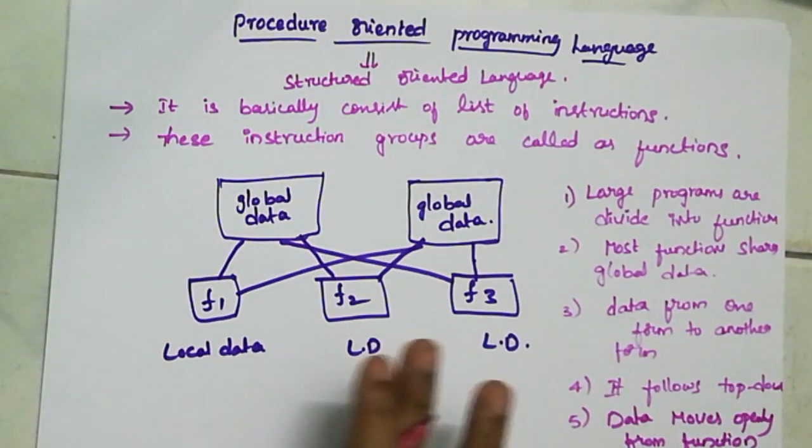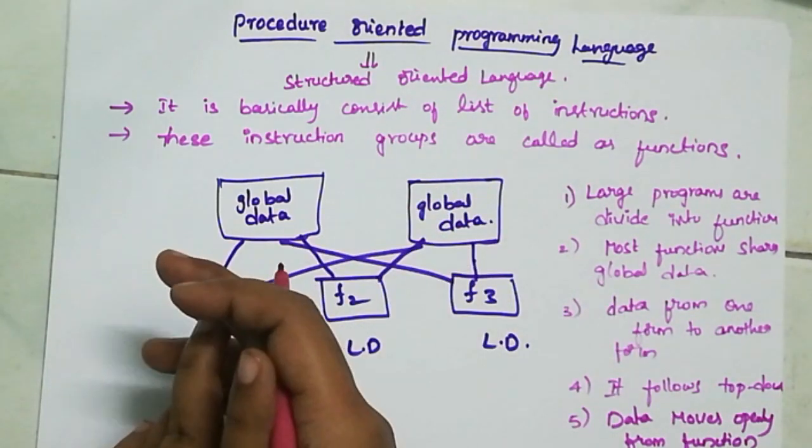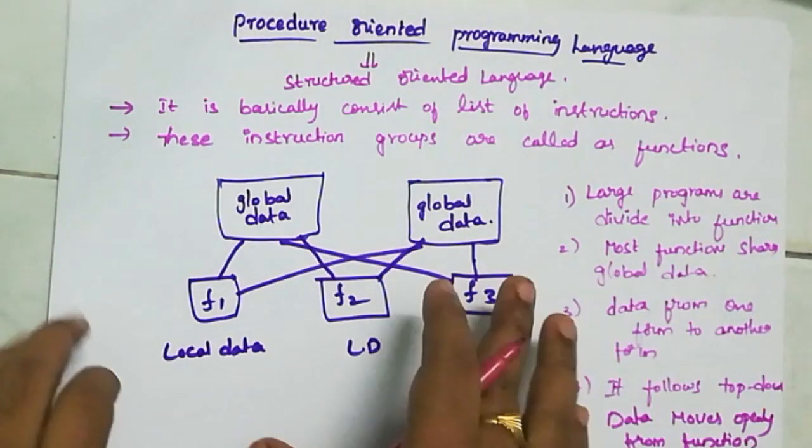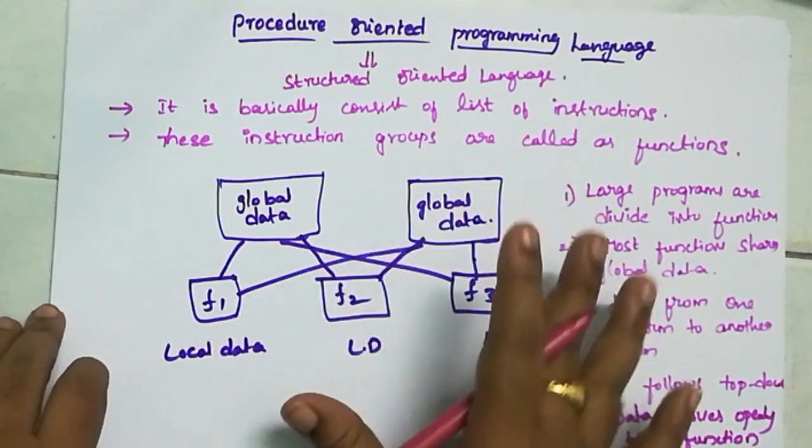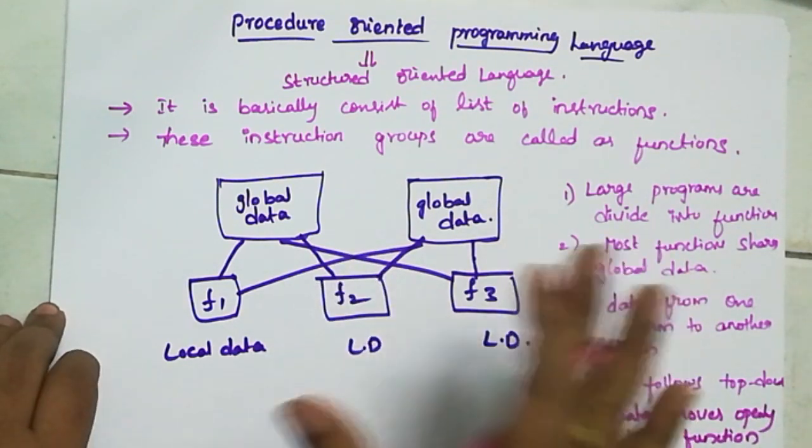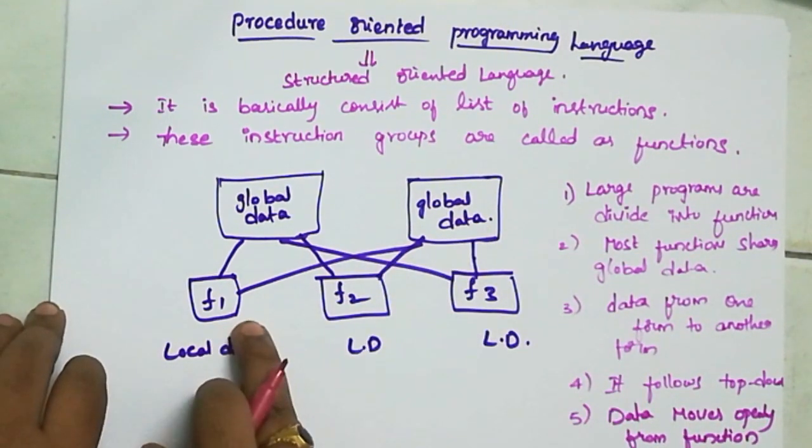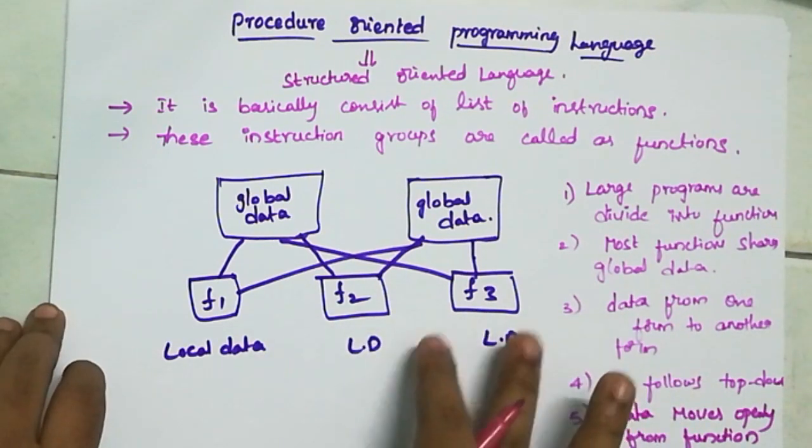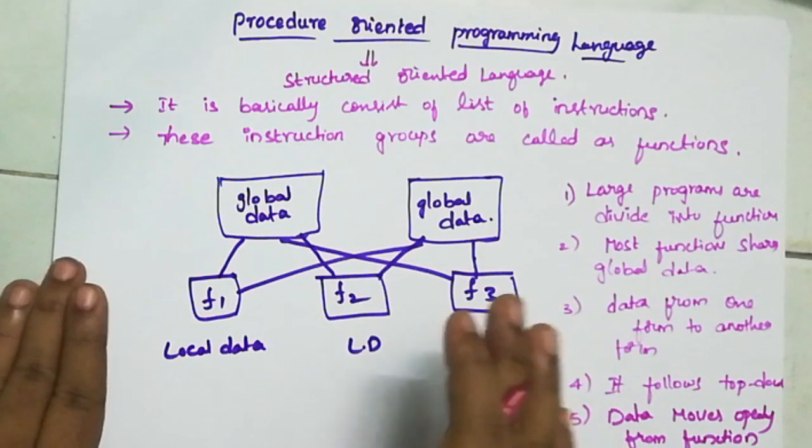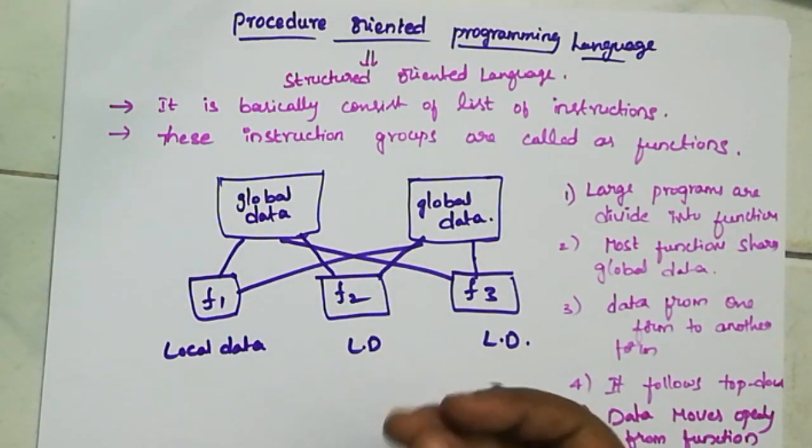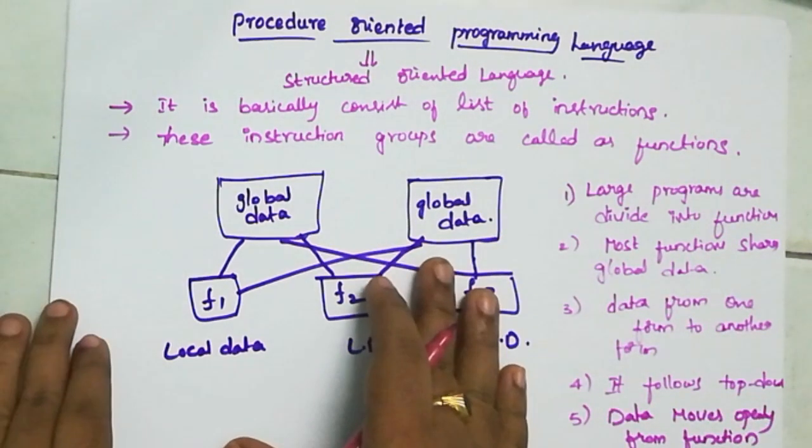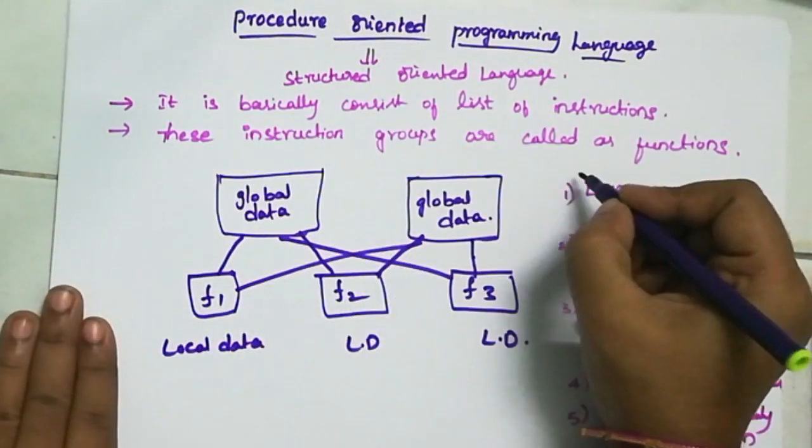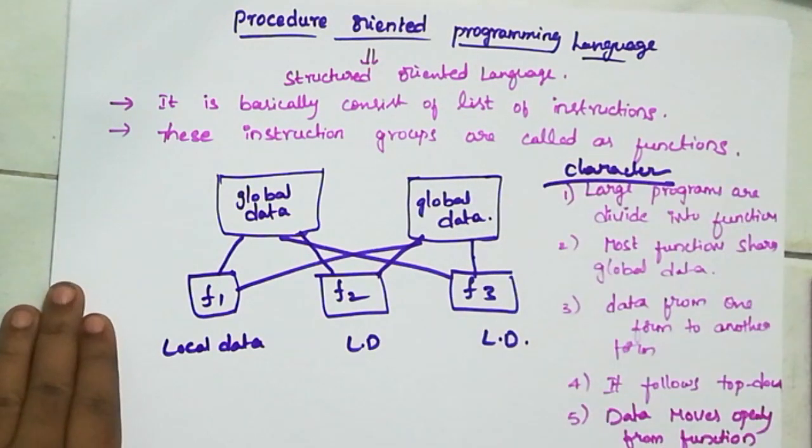So here main importance is instruction and function. So we will explain how functions work. First of all, after this, there are drawbacks. So we understand that every program has compulsory functions. Every function accesses some outside global data. Large programs are possible. So here we have some basic drawbacks. We will overcome that. After procedure oriented language, we will move on to object oriented language. First, here we have characteristics. This is the concept and characteristics. So next one: drawbacks.